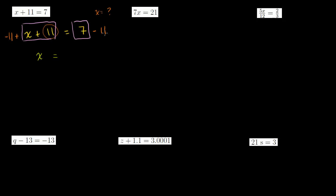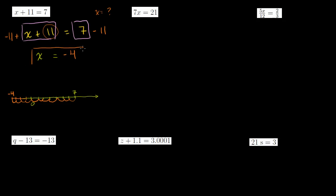x is equal to 7 minus 11. You could draw a number line: starting at 7 and going back 11 takes you to negative 4. So 7 minus 11 is negative 4. That's our first equation solved. We can verify: negative 4 plus 11 is the same as 11 minus 4, which is indeed 7.